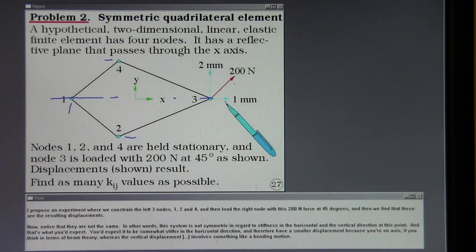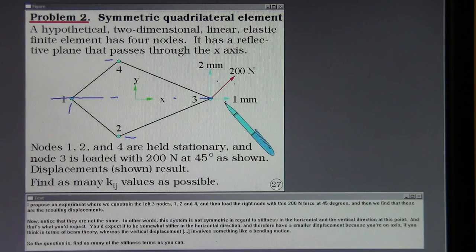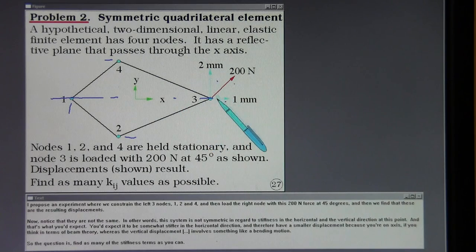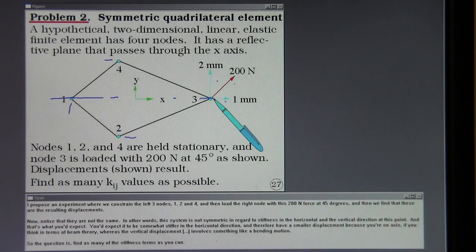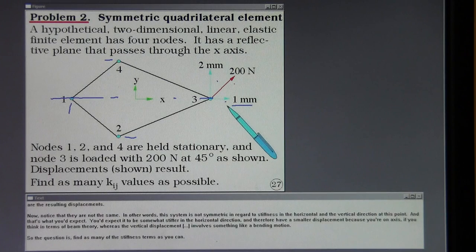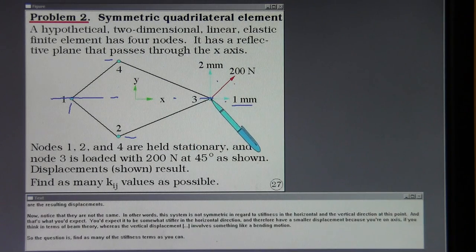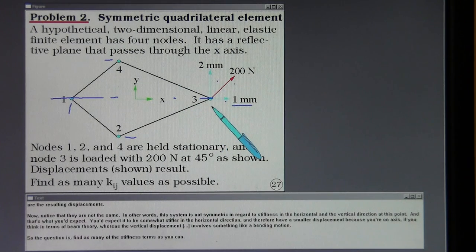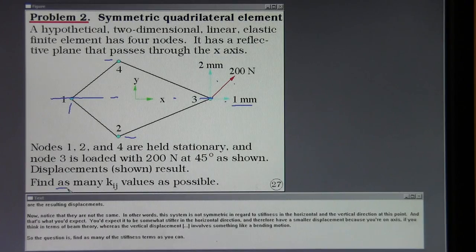Now notice that they are not the same. In other words, this system is not symmetric in regard to stiffness in the horizontal and the vertical direction at this point. And that's what you'd expect. You'd expect it to be somewhat stiffer in the horizontal direction and therefore have a smaller displacement because you're on axis. If you think in terms of beam theory. Whereas the vertical displacement involves something like a bending motion. So the question is find as many of the stiffness terms as you can.